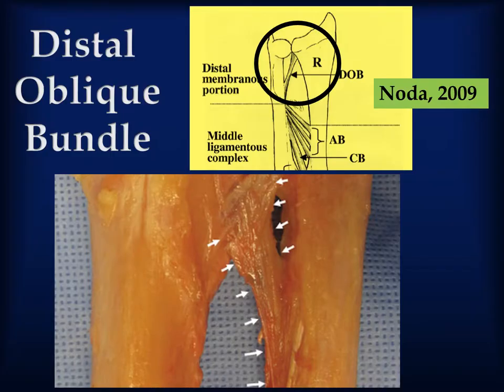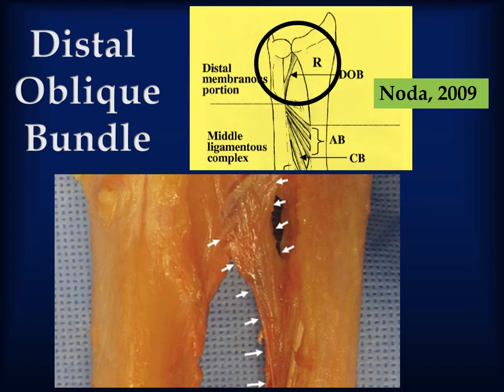The dorsal oblique bundle originates from approximately the distal one-sixth area of the ulnar shaft at roughly the proximal border of the pronator quadratus and runs distally towards the distal radial ulnar joint. Its fibers blend into the capsular tissue of the distal radial ulnar joint to insert on the inferior rim of the sigmoid notch of the radius. Some fibers continue to blend into the dorsal and palmar radial ulnar ligaments of the triangular fibrocartilage. This bundle is present in 85% of specimens and is isometric in all forearm rotation positions.